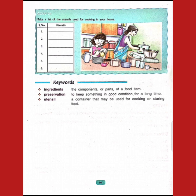Your assignment is to write all these keywords in your science copies very neatly. Before starting, write the name of the chapter, date, and day, then give the heading 'Keywords.' Then write all three keywords — number one, two, and three — very neatly in your science copies.